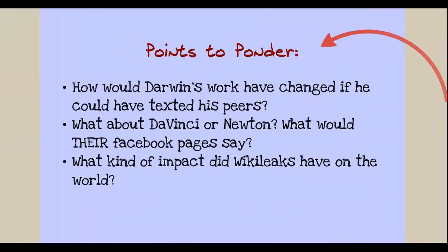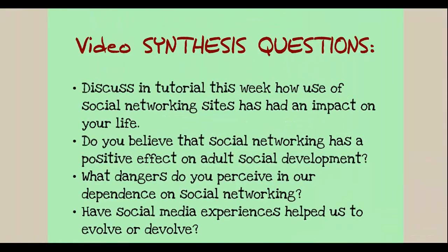Here are a few points to ponder. How would Darwin's work on evolution have changed if he could have texted his peers? What about Da Vinci, or Newton, or Mozart — what would their Facebook pages say? And what kind of impact did the recent WikiLeaks have on the world? Here are the synthesis questions for this video. We're going to discuss in tutorial this week how the use of social networking sites has had a direct impact on your life and work. Do you believe that social networking has a positive effect on adult social and psychological development? What dangers do you perceive in our dependence on social networking? Have social media experiences helped us to evolve or devolve? And fast-forward brainstorm: can you predict some future areas not mentioned in this video where social networking might have an impact — either positive or negative — on the psychology of the human condition?